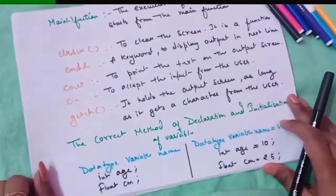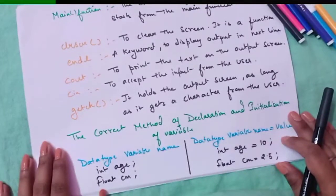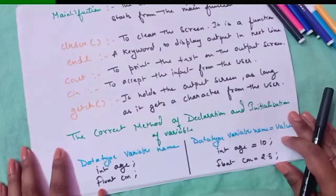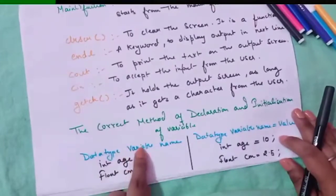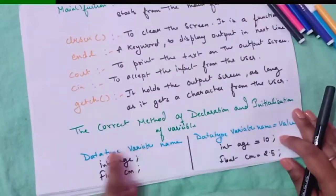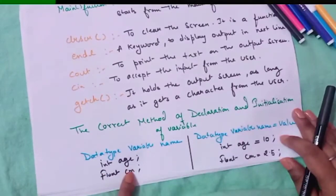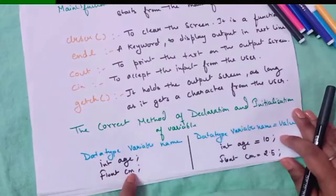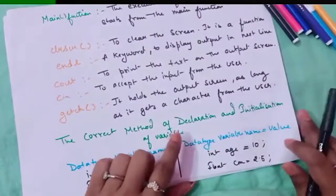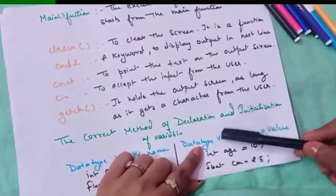Now we will see the method of declaration and initialization of a variable. As explained in my previous video, a variable must be declared with its data type first. The syntax is: data type followed by variable name. For example, `int age` — here `int` is the data type and `age` is the variable name. Similarly, `float cm` — `float` is the data type and `cm` is the variable name.